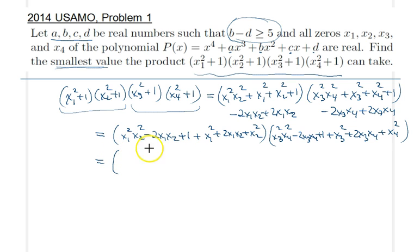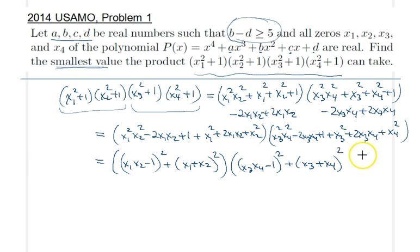But then this in turn can be written as, this is a perfect square here, so we have (x₁x₂ - 1)², and this term here is also a perfect square, so we have (x₁ + x₂)². And the second term will have a similar expression here, so (x₃x₄ - 1)² plus (x₃ + x₄)².